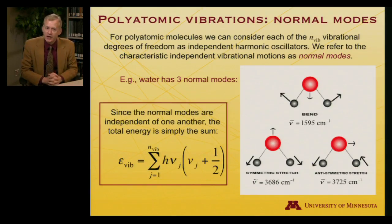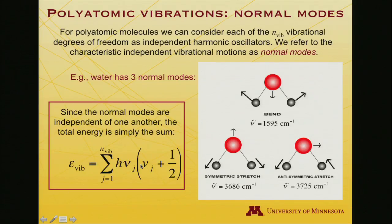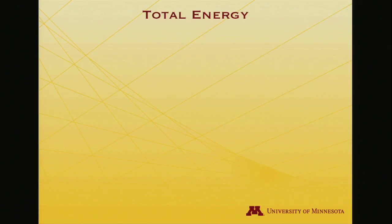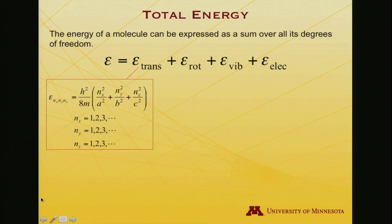Coming back to the energetics: each of these normal modes acts as an independent harmonic oscillator, contributing the normal harmonic oscillator energy expression with its unique frequency. So for vibration one, it's Planck's constant times the vibrational frequency for mode one times the quantum number for that mode plus one-half, then add H times the frequency for mode two times its quantum number plus one-half, and so on — you just add them up. The total energy in a polyatomic molecule is the sum of energies over all degrees of freedom.